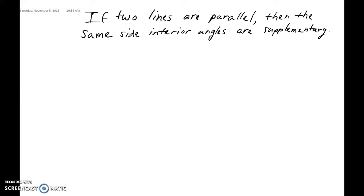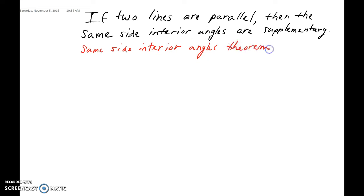In section 4.2, we were talking about when we were given lines are parallel, and then solving for certain angle measurements or talking about the relationships. This is an example from section 4.2 — our same side interior angles theorem. That states if two lines are parallel, then the same side interior angles are supplementary. In this case, we're given that the lines are parallel — that's our given information.